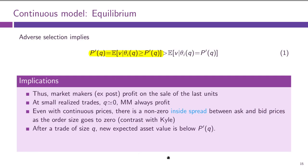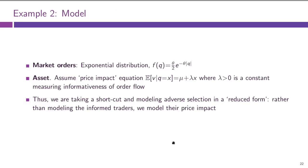There was one example from Wednesday's slides we didn't go through. This is Example 2. Here we take a very aggregate approach — not looking at the micro-level behavior of traders or optimality. We assume some distribution of total trade size Q in the market, assuming Q has an exponential distribution symmetric around zero.